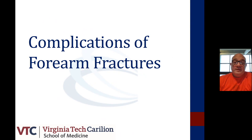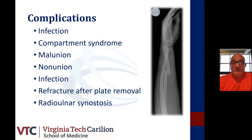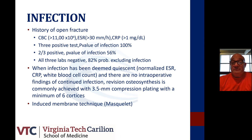With any forearm fracture treatment, complications can arise from the pattern of injury. These include infection, compartment syndrome, malunion, nonunion, refracture after plate removal, and radioulnar synostosis. Infection is more commonly associated with open injuries. To treat infections once present, we provide aggressive treatment — remove the infected hardware and reestablish a soft tissue environment free of infection, meaning that lab values have normalized, specifically the ESR, CRP, and white blood cell count.